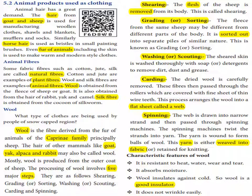Characteristic features of wool: resistance to heat, water, wear and tear. It absorbs moisture. Wool insulates against cold — it is a good insulator. It does not wrinkle easily. These are the characteristics of wool.